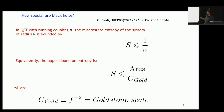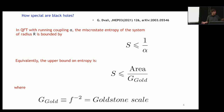The bound turns out to be the inverse of the coupling — of course the coupling runs in quantum field theory, so you have to evaluate the coupling at the scale r. Equivalently, the same bound is simultaneously the area of an object in units of the Goldstone coupling.